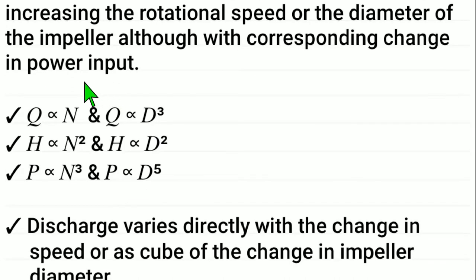Q proportional to N and Q proportional to D cubed. That means discharge is proportional to speed and discharge is proportional to diameter cubed.